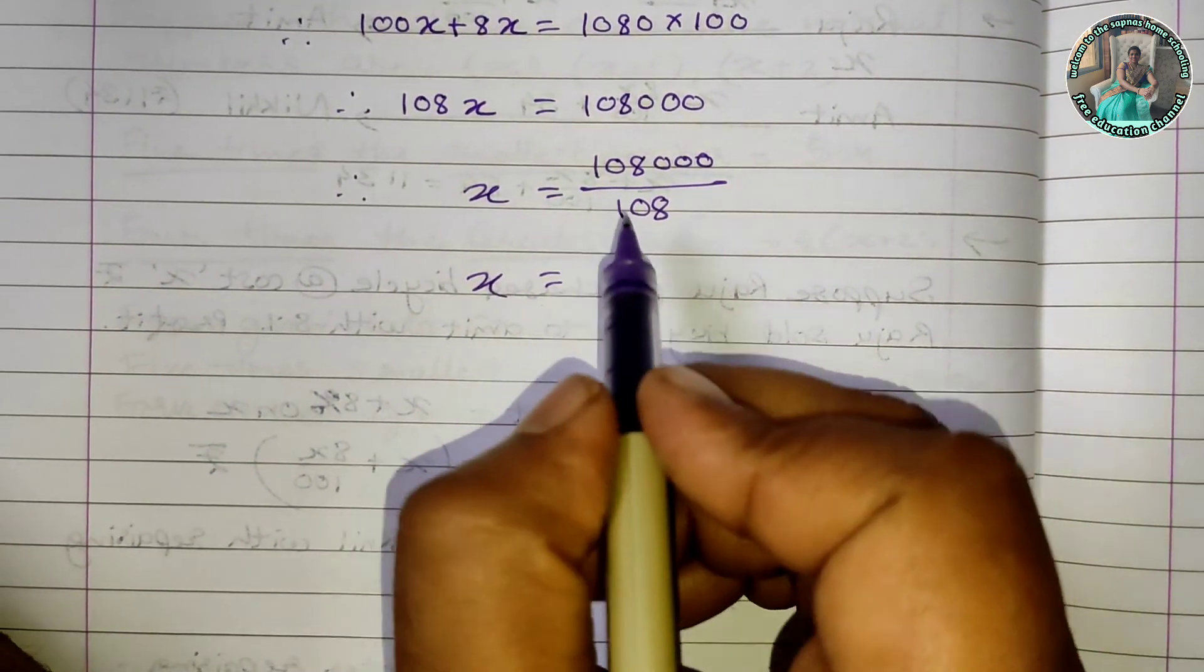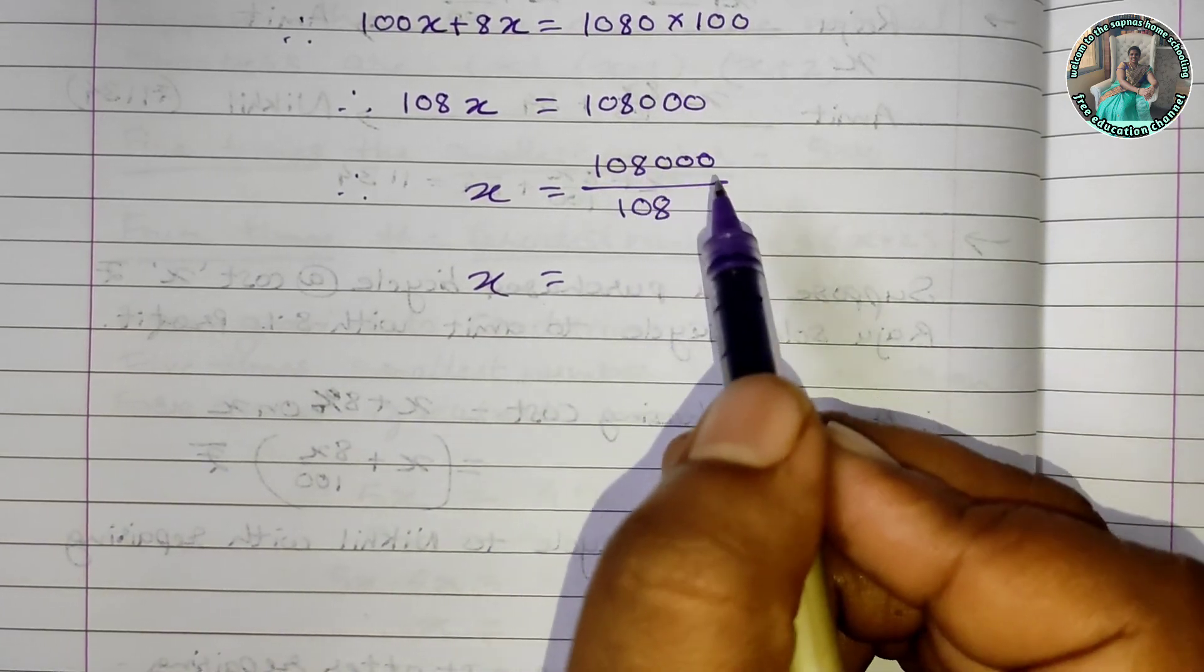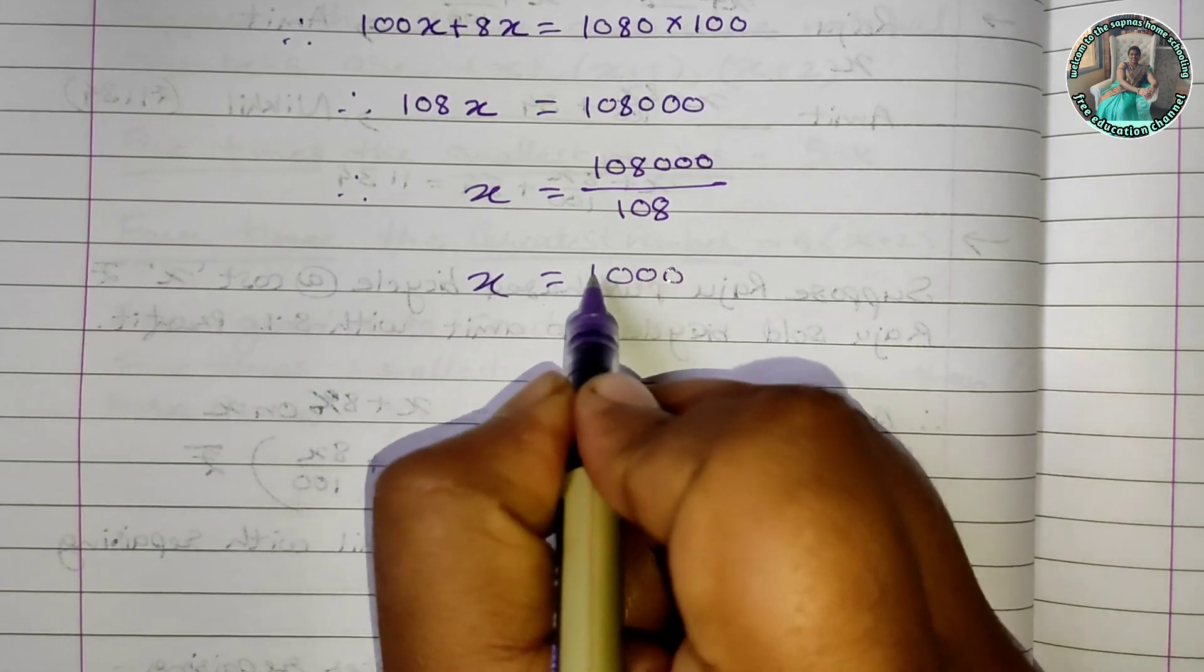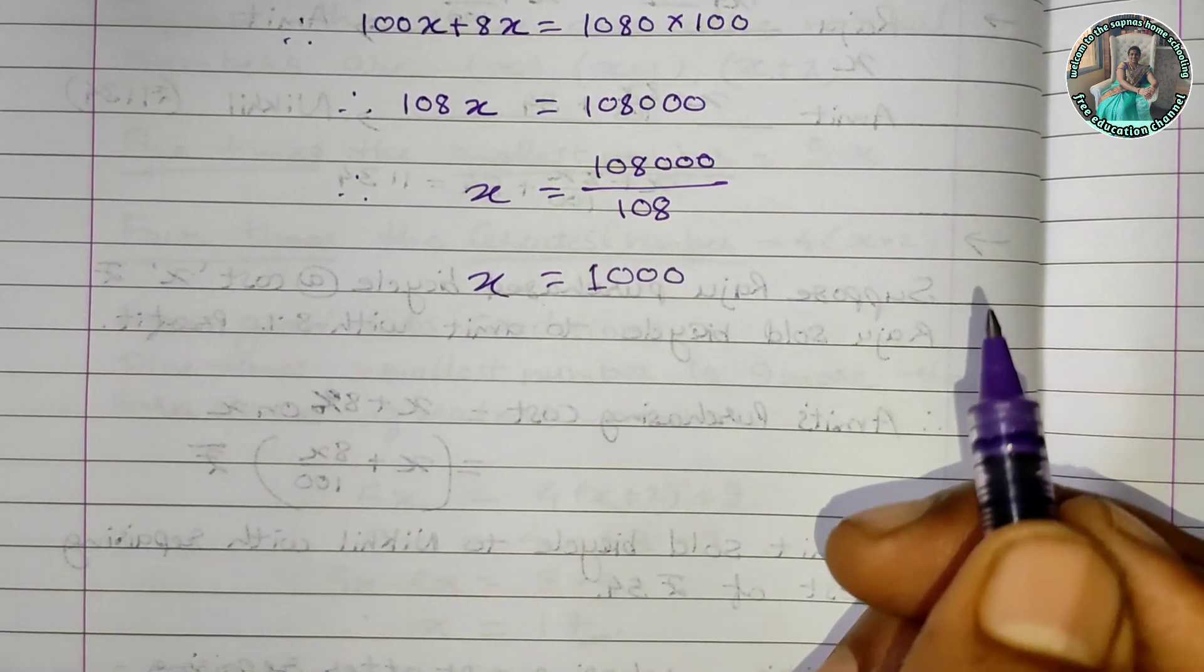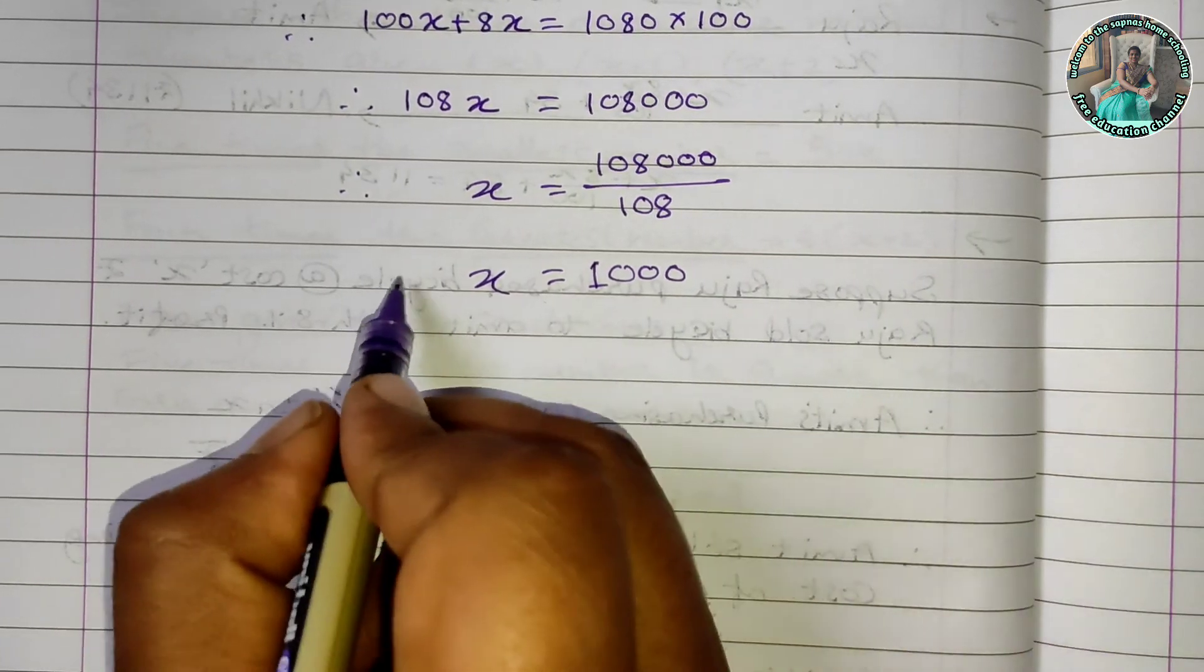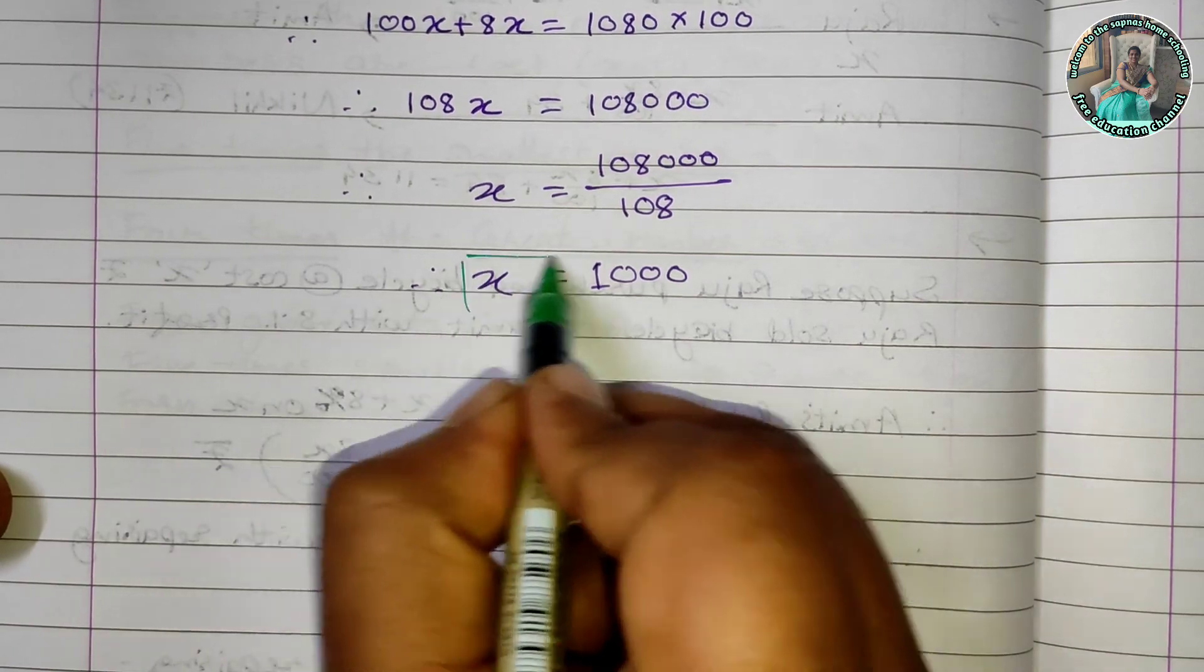x equals 108000 divided by 108. Solving this, 108 into 1 equals 108, and adding zeros we get 108000 divided by 108 equals 1000. So x equals 1000.